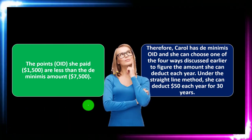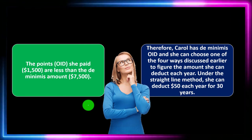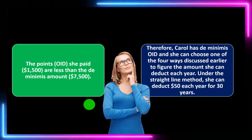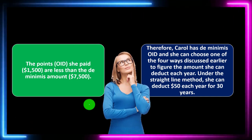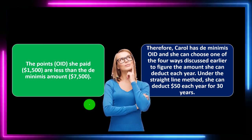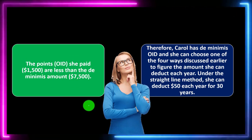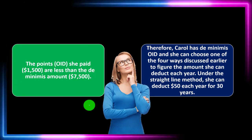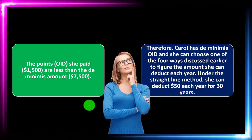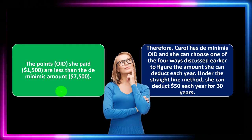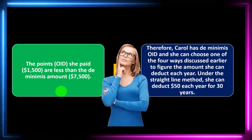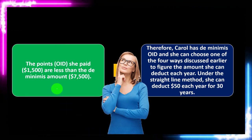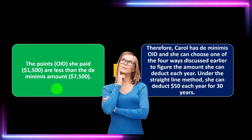Carol has a de minimis OID and can choose one of the four methods to figure the amount she can deduct each year — like a straight-line method, a fairly easy method. Notice that no matter what you do, having to allocate the deduction over 30 years is a negative — you get the deduction, but allocating $1,500 over 30 years gives a fairly small amount each year.